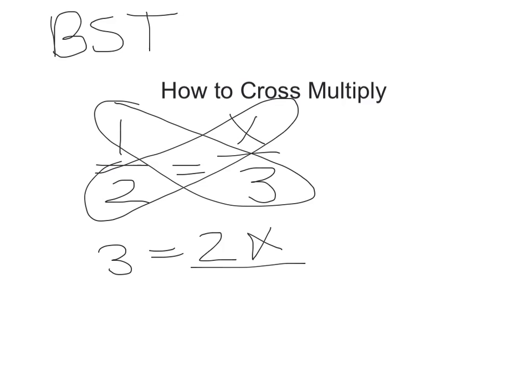Then you would divide the 2 to get the x alone. Your final answer would be 3 divided by 2.